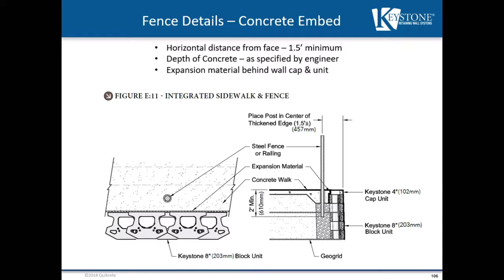Integrating a sidewalk makes it easier to get fences closer to the back of the wall, and we have two details here. The first has the fence abutting the back of the unit so you can still use a cap unit on your retaining wall. You utilize a thickened edge behind the wall facing system, and there is an expansion material behind the back of the units to separate the two items so they can act independently. There's no post depth minimum outside of two feet, and you'll have one layer of geogrid. This detail is more suited for metal railing fences rather than wood-style fence posts, but it's a very easy detail to integrate within the Keystone wall system.